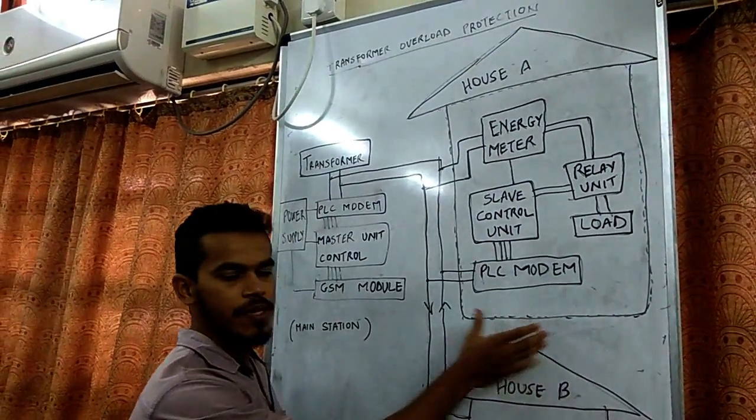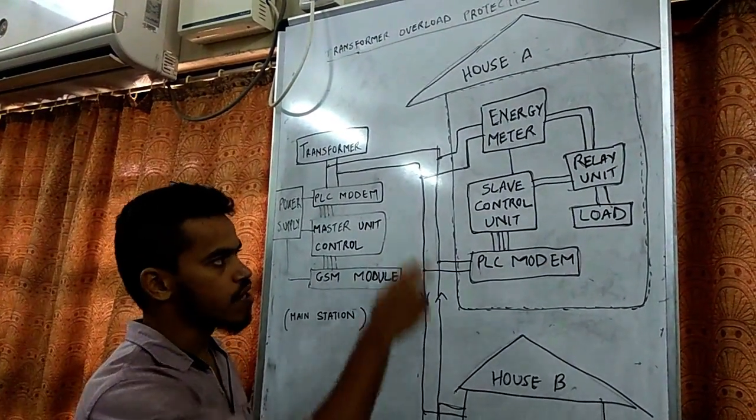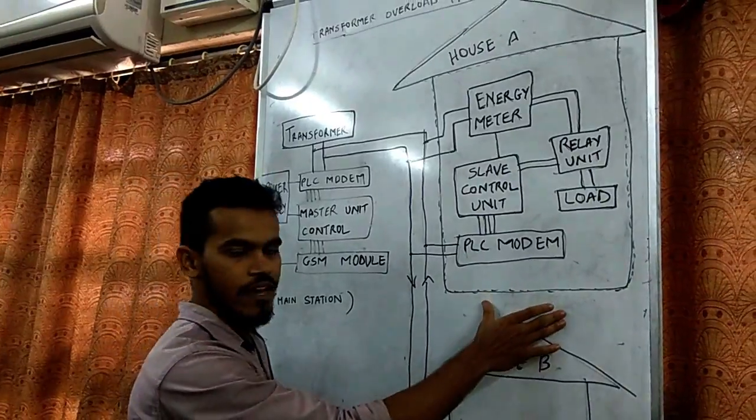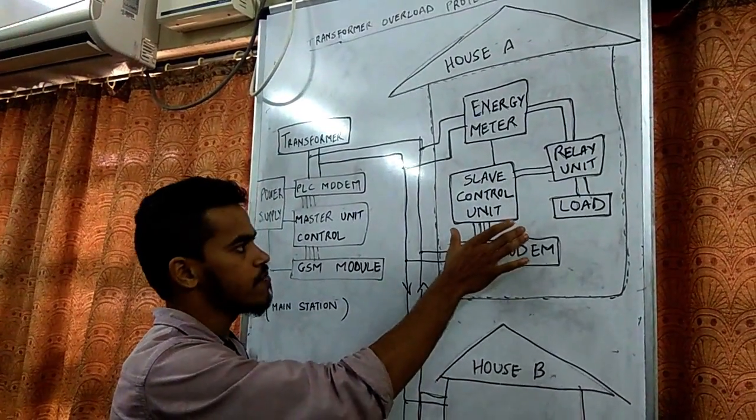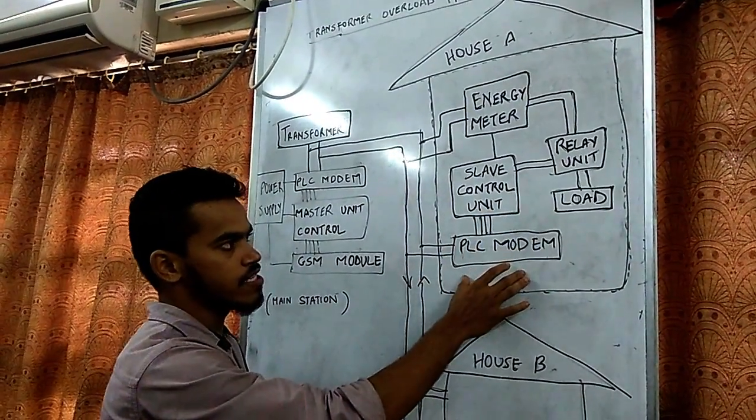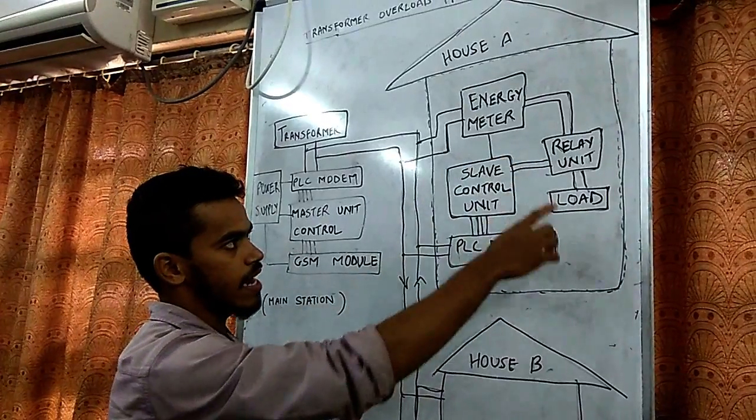The slave will be communicating to master unit through transmission line. At the slave part, we will be having a controller, PLC modem, energy meter, and relay unit.